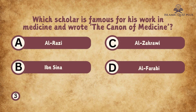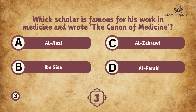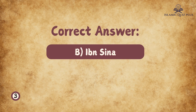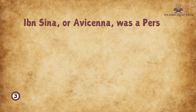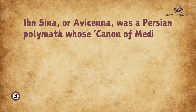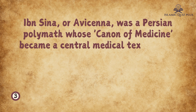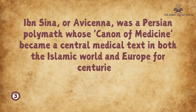Question 3: Which scholar is famous for his work in medicine and wrote The Canon of Medicine? A. Al-Razi, B. Ibn Sina, C. Al-Zahrawi. The correct answer is B. Ibn Sina. Ibn Sina, or Avicenna, was a Persian polymath whose Canon of Medicine became a central medical text in both the Islamic world and Europe for centuries.